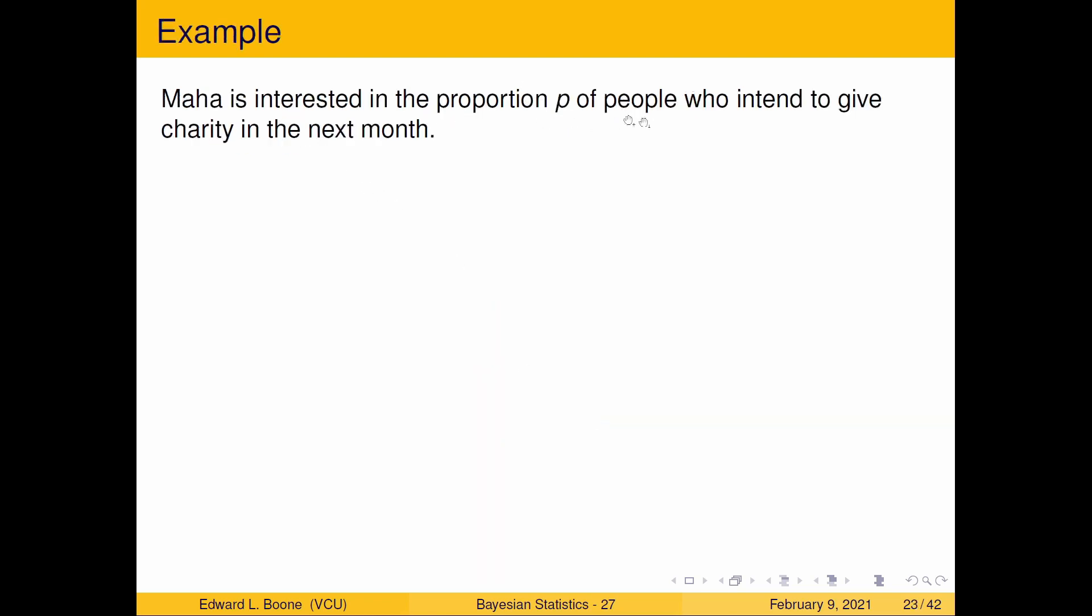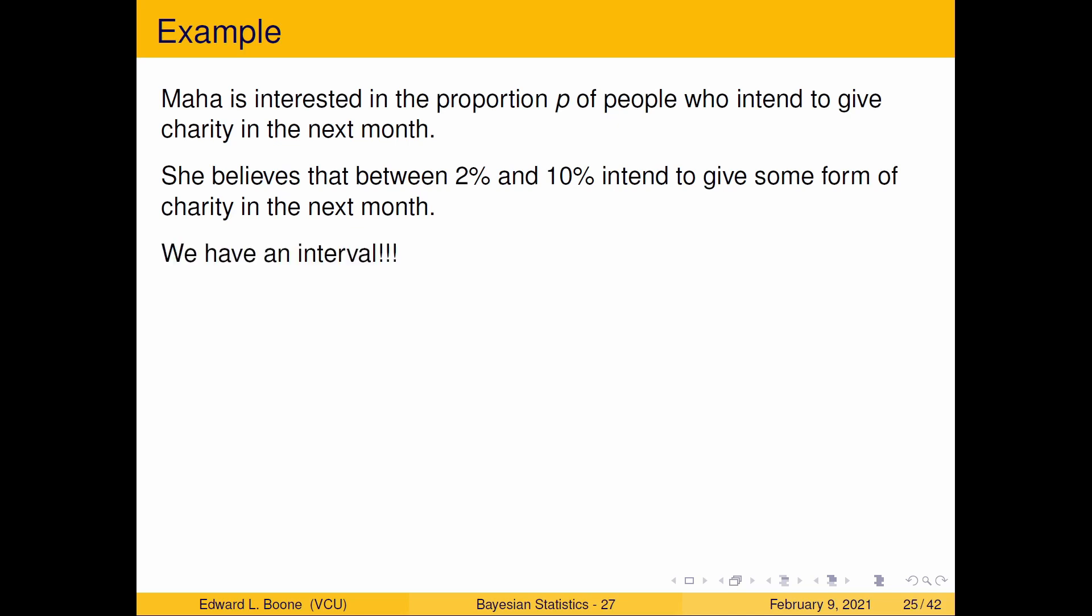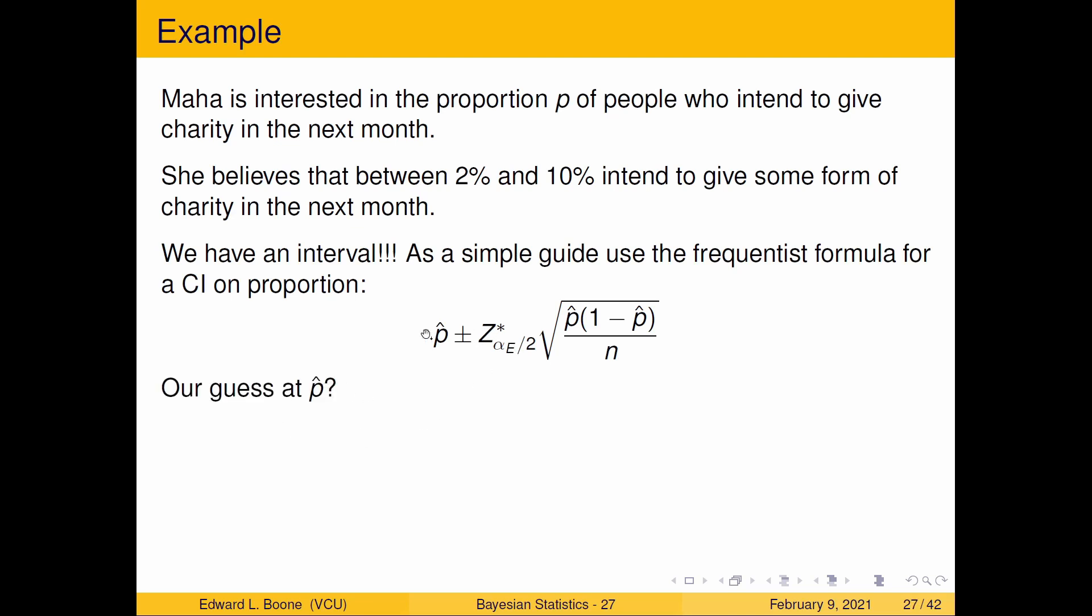So Maha is interested in the proportion of people who intend to give charity next month. She believes between 2% and 10% intend to give some form of charity in the next month. So you can think of this as being sort of like a confidence interval. So if we tear this apart like sort of a frequentist confidence interval, we can pull the information out.